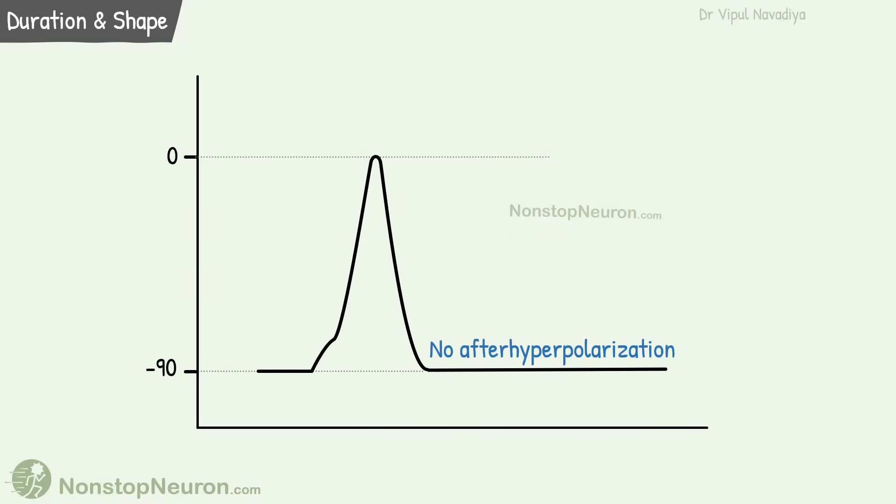Finally, some cells do not show after hyperpolarization. See, after hyperpolarization occurs because potassium channels close slowly allowing potassium efflux for some time. But in some cases, repolarization does not involve potassium channels at all. They repolarize merely by closure of sodium channels. In that case, voltage returns directly to resting membrane potential without any after hyperpolarization.